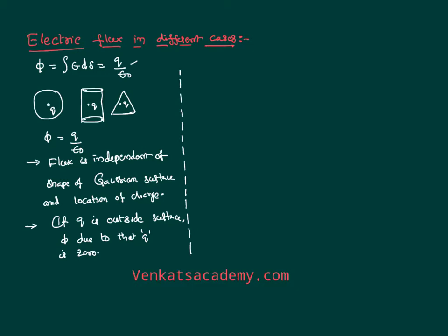Because due to that outside charge, the incoming flux is equal to the outgoing flux, so the effective flux in that closed surface is zero. Now let us consider a simple scenario: if I have a sphere, the total flux is nothing but Q by epsilon. Now say I am having only a hemisphere, and I have a charge Q on the surface of the hemisphere.